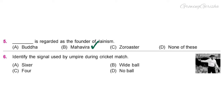Question 6. Identify the signal used by the umpire during a cricket match. Option D: No ball.